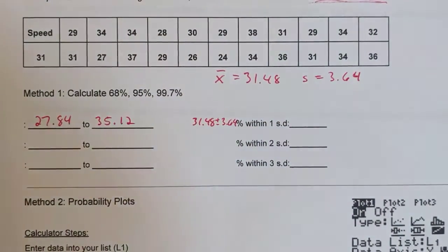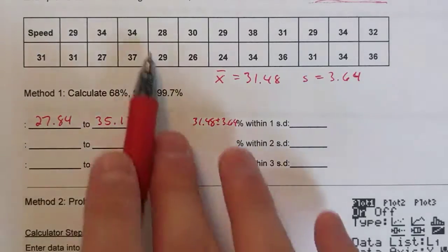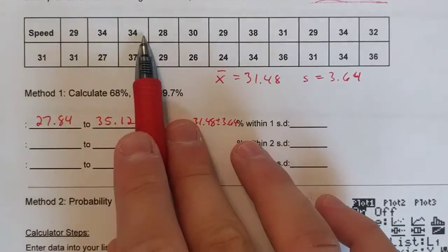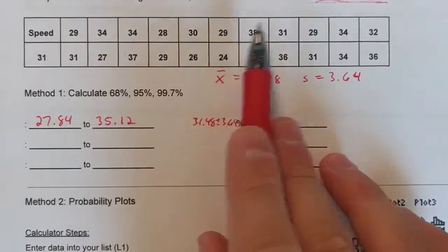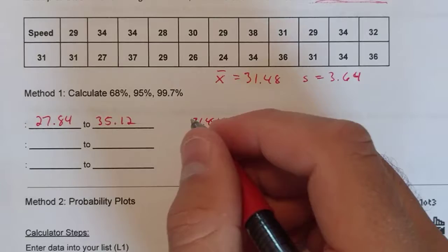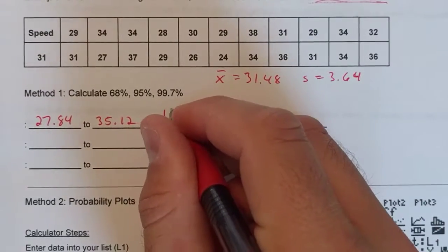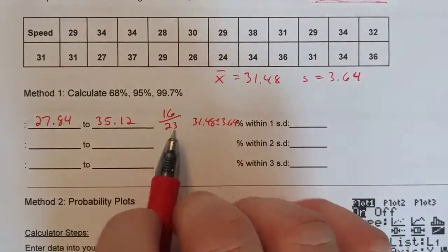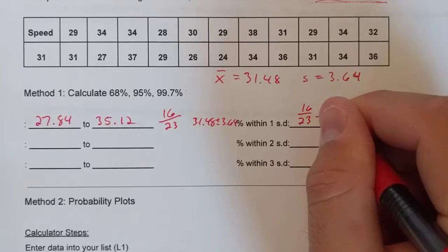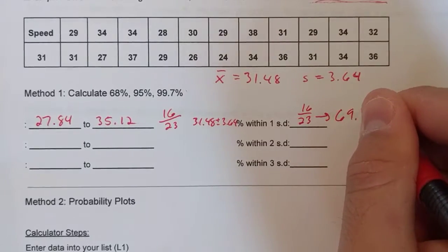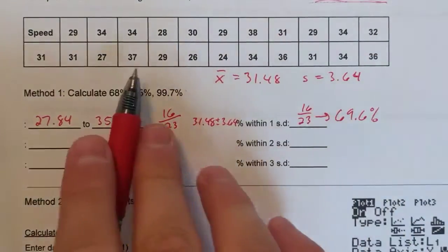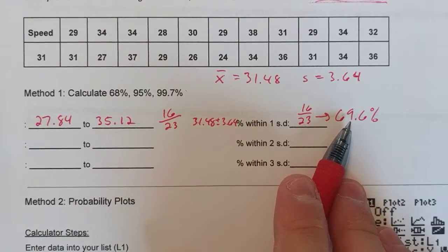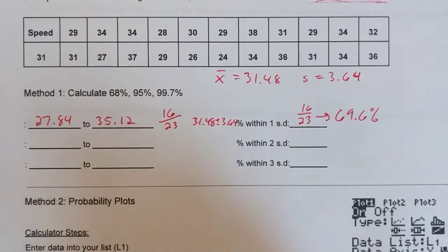If you go through and count how many data points are actually in that window, for example, 29 would count, 34 would count, 34 would count, 28 would count, 30, 29. You go through the entire list. Out of the 23 data points, 16 of them actually fall in that window. If you calculate the percentage of 16 over 23, that percentage is actually 69.6 percent. In terms of being close to 68 percent, that's pretty close. It's only a percent and a half off. So it's approximately normal so far.